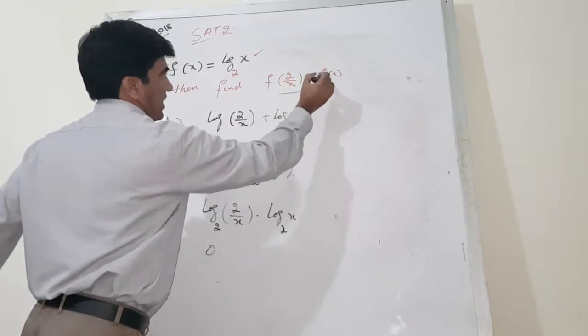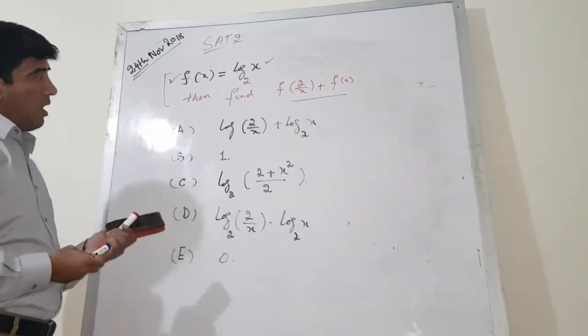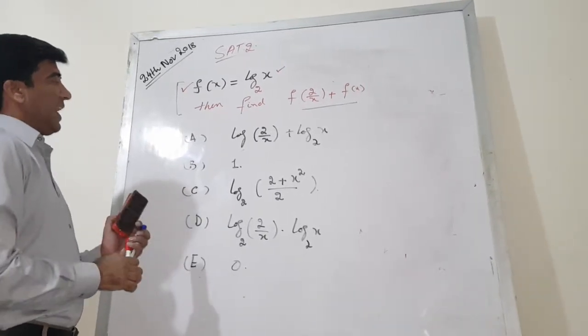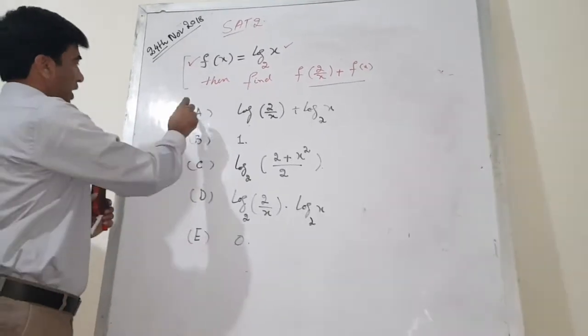f(2/x) plus f(x). Now you have to select one option from a to e.